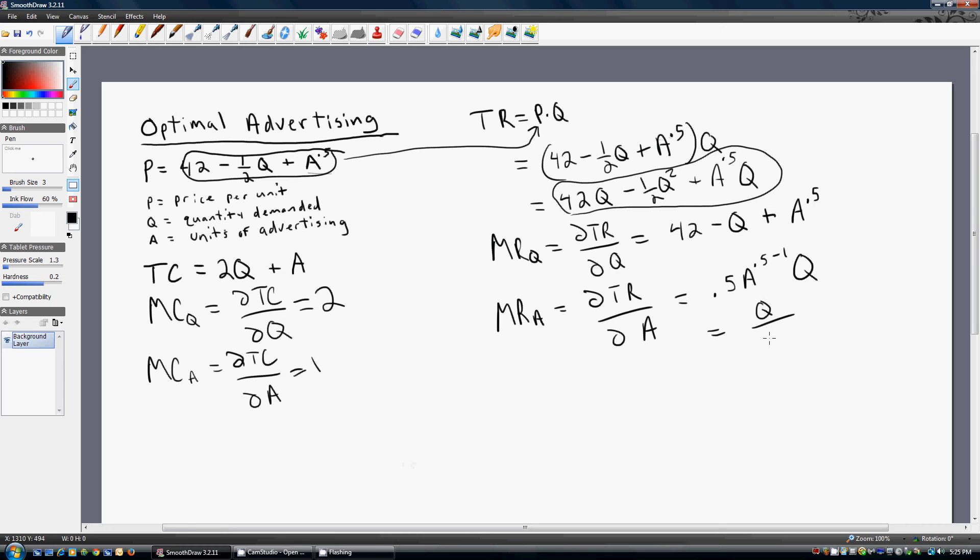So this 0.5 is just 1 half, so I'll put 2 down here. And then A to the minus 0.5 power, I'm just going to rewrite that using the rules of exponents and put A to the minus 0.5 into the denominator as the square root of A.